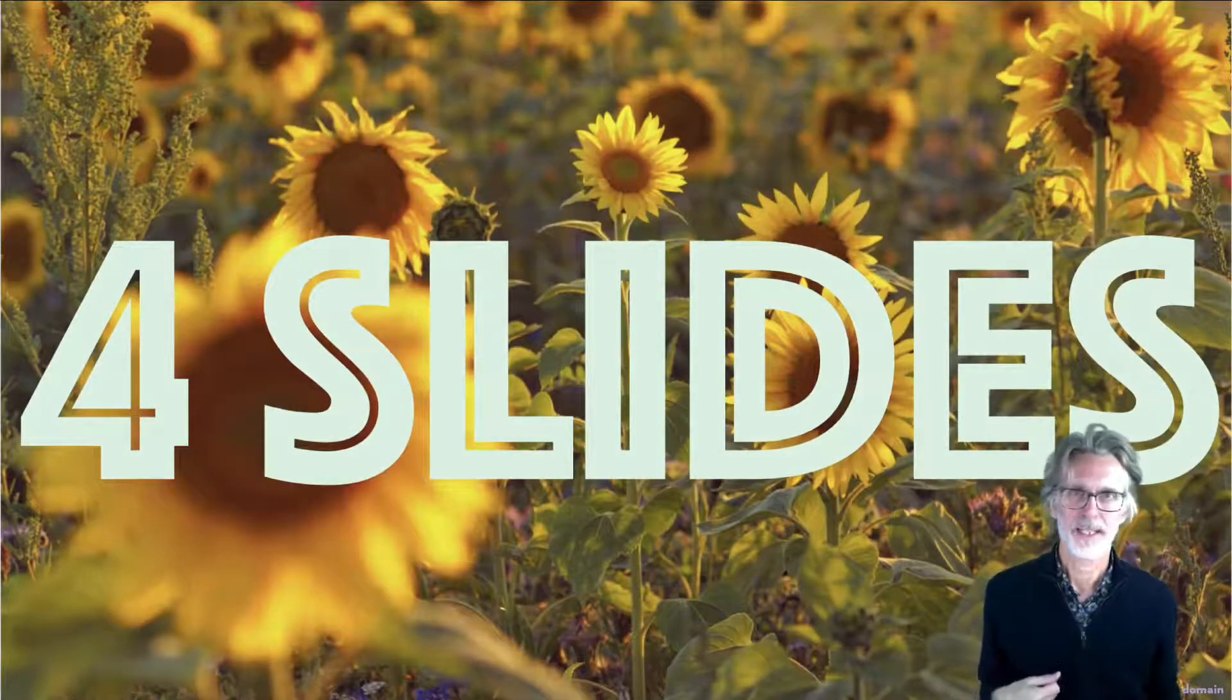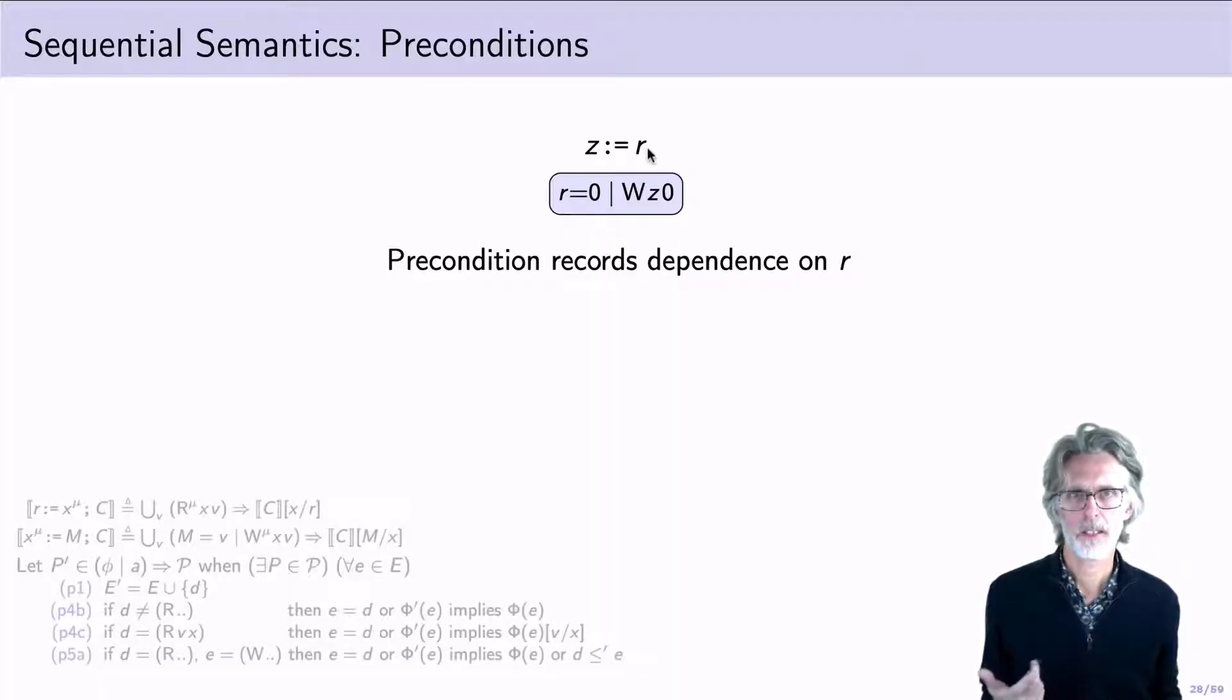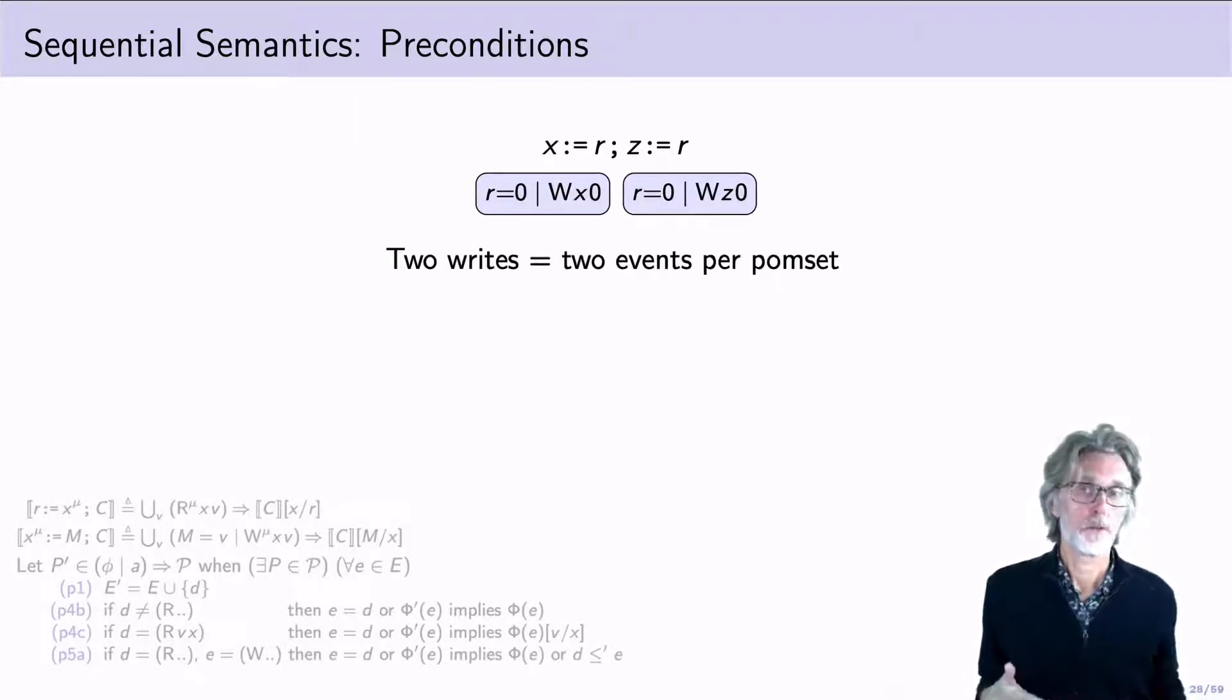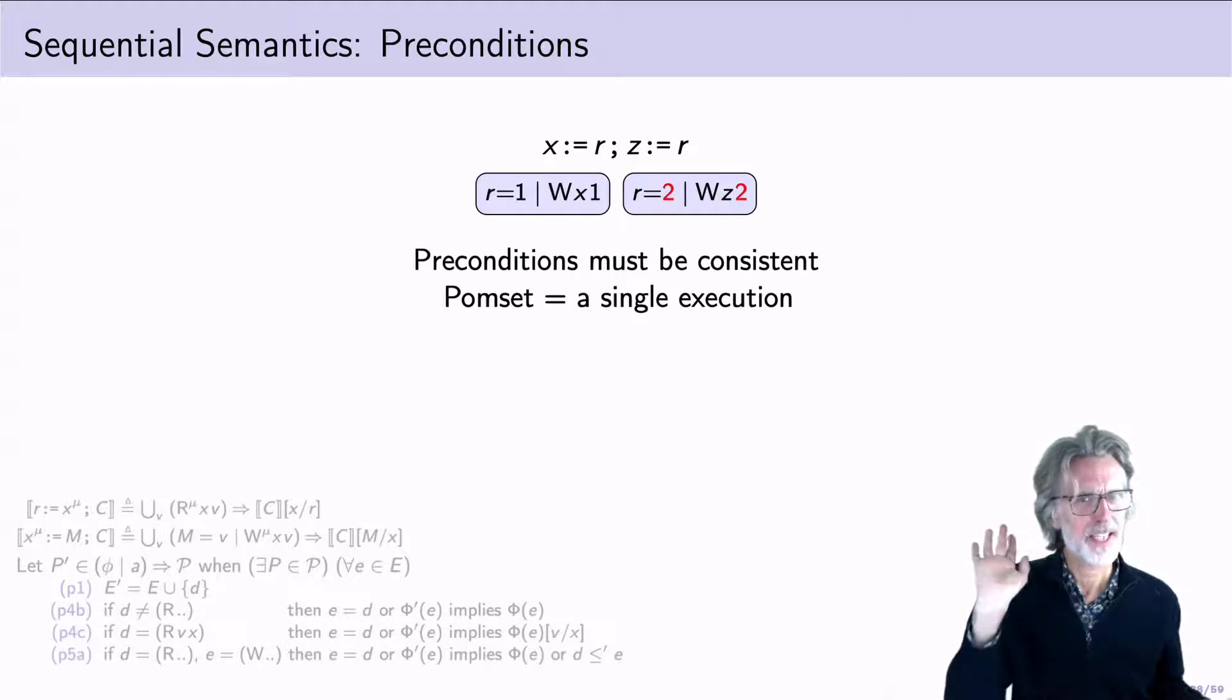The semantics is best understood by example. So what I'm showing here is a simple program and one of its implication minimal POM sets. So you can see here the precondition r is 0 is required to produce this write action. Of course, I could have different values for r and that would give me different POM sets. If I write r twice, I'll end up with two separate events. And of course, those might have different values. However, if I'm seeing different values for r, then I have an inconsistency. And this POM set would be disallowed.